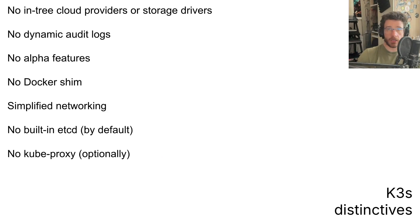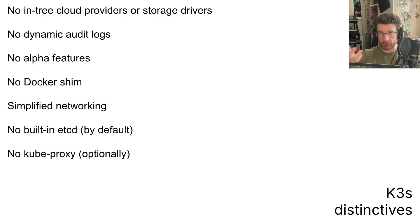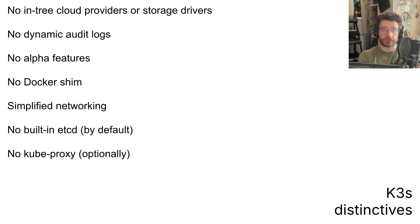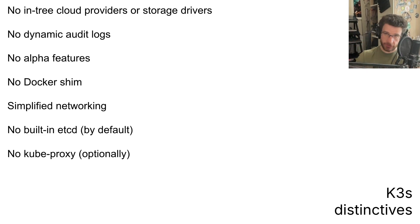You use external CSI drivers for writing files to disk. It hasn't got audit logs — much simpler logs. Nothing alpha is turned on; it's just stable.